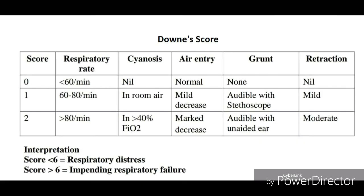For grunting sound: if no audible grunting, score is 0; if audible with stethoscope, score is 1; if audible with the unaided ear, score is 2. For retractions including all areas — nasal flaring, upper chest, lower chest, and subcostal: if no retraction, score is 0; if mild retraction, score is 1; if moderate or marked retraction, score is 2. If the total score is less than 6, we label it respiratory distress. If the score is more than 6, the patient has impending respiratory failure and requires ventilatory support.